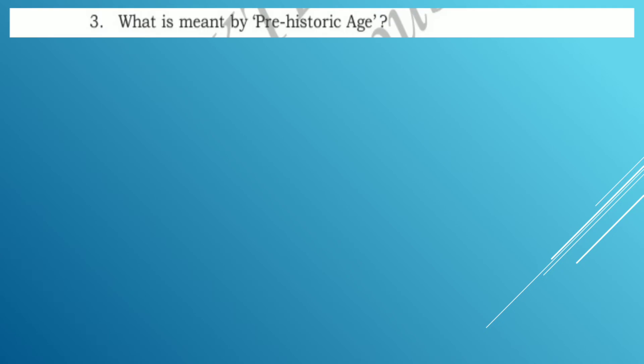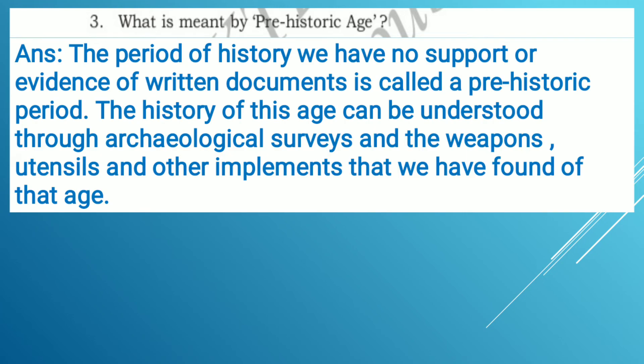Third question: what is meant by prehistoric age? Answer: the period of history for which we have no support or evidence of written documents is called the prehistoric period. The history of this age can be understood through archaeological surveys and the weapons, utensils and other implements that have been found of that age.